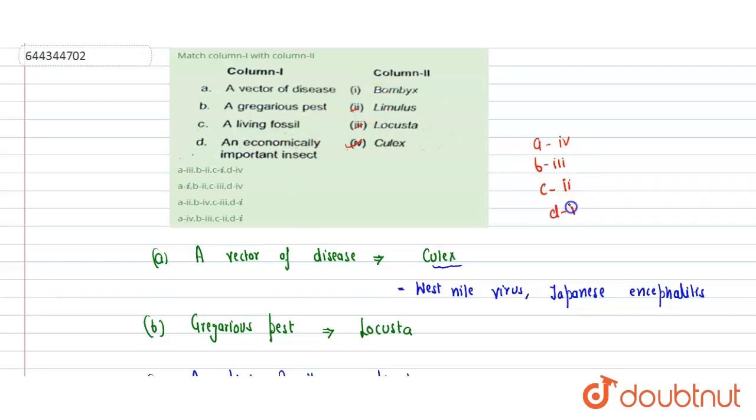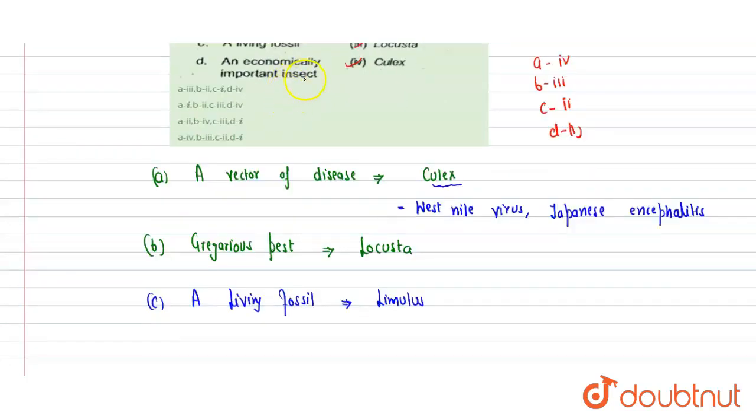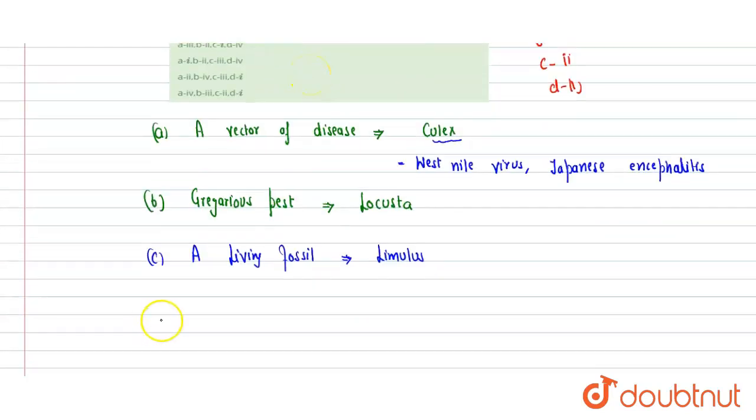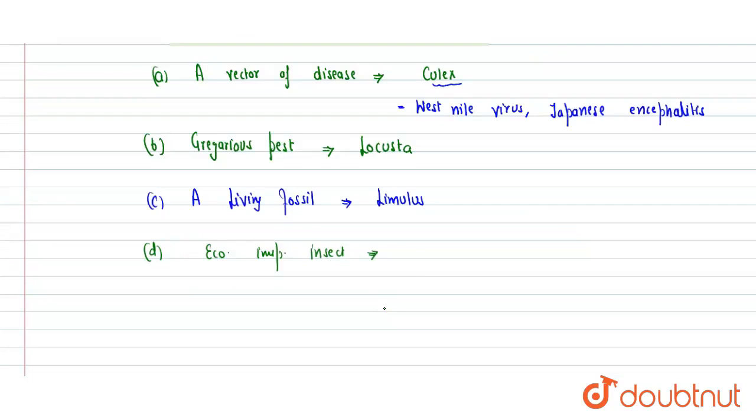For d, we'll write one, but we should know the explanation. An economically important insect, and the last option left is Bombyx.